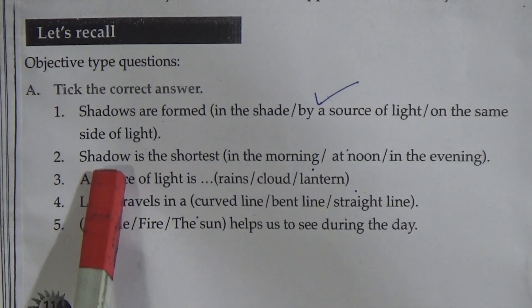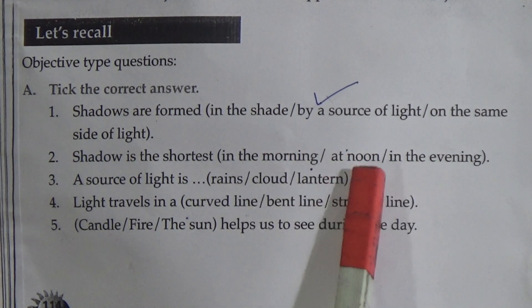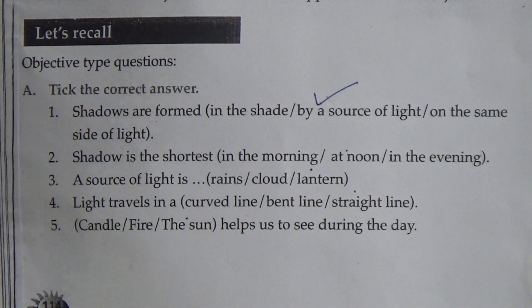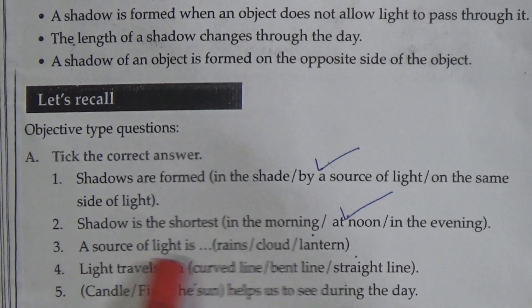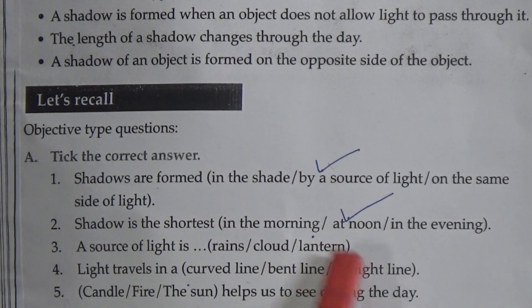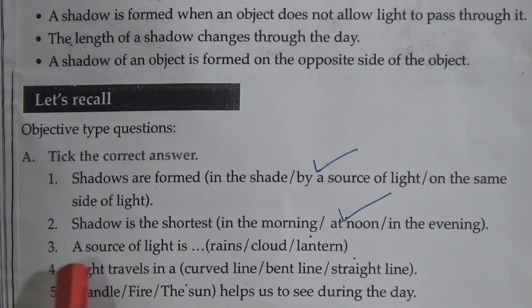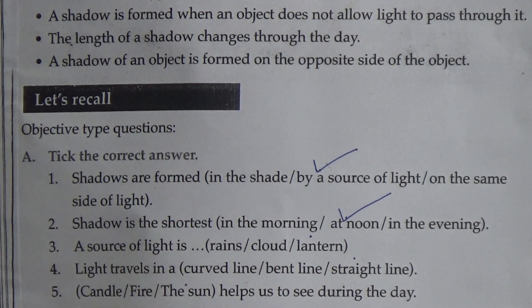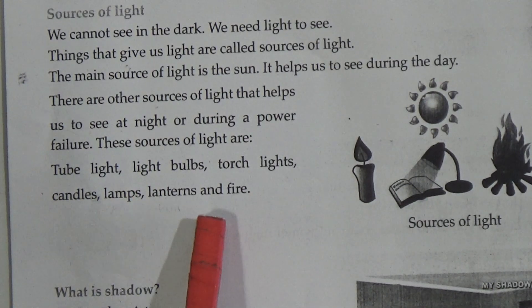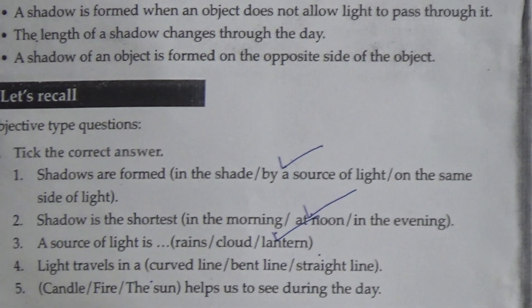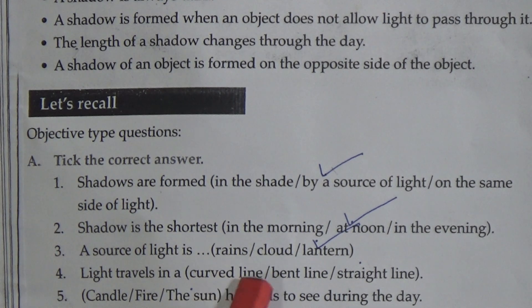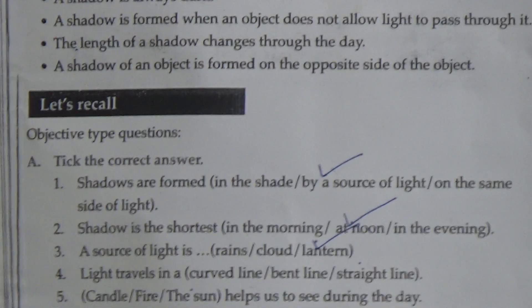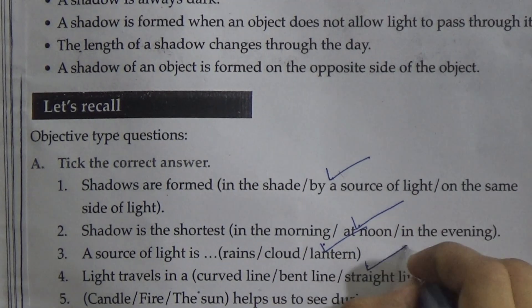Number 2: Shadow is the shortest — options are in the morning, at noon, and in the evening. We know that shadow is shortest in the afternoon, so we put the tick mark on 'at noon.' Number 3: The source of light — options are rain, clouds, lantern. We know sources of light include tube light, light bulbs, torch light, candles, lamps, lanterns. So we put the tick mark on 'lantern.' Number 4: Light travels in a curved line, bent line, or straight line. We know that light travels in a straight line, so we put the tick mark on 'straight line.'